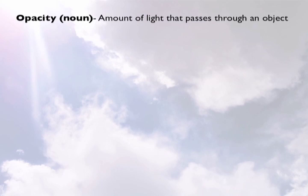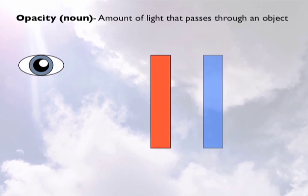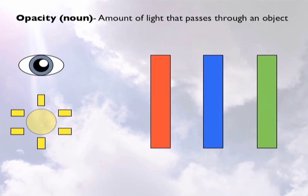First, let's learn a little bit about how light works. The opacity of an object is the amount of light passing through the object. To demonstrate this, we're going to look at three shapes and how different levels of opacity affect which of the shapes we can see.